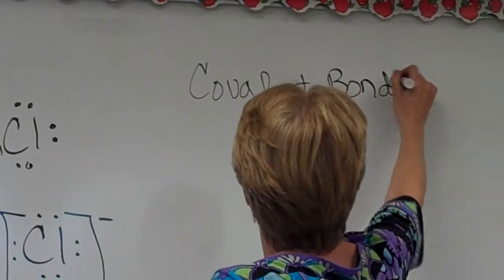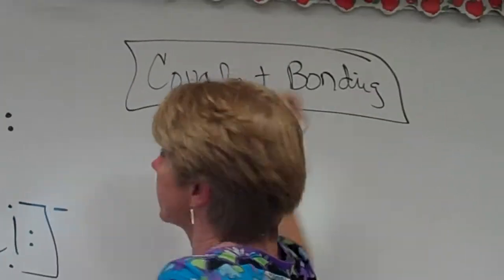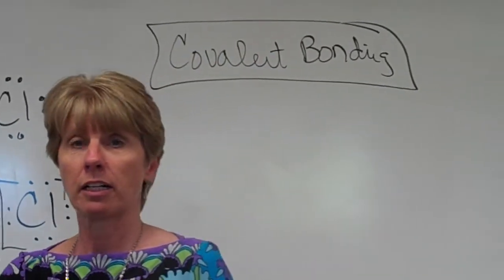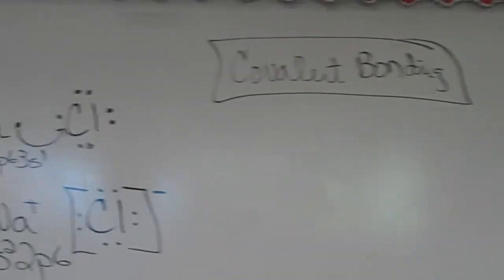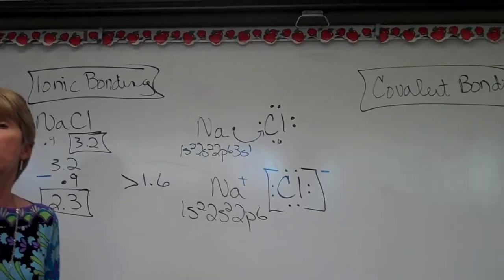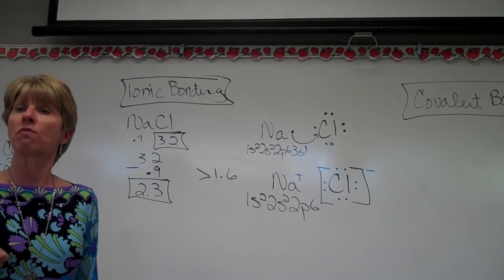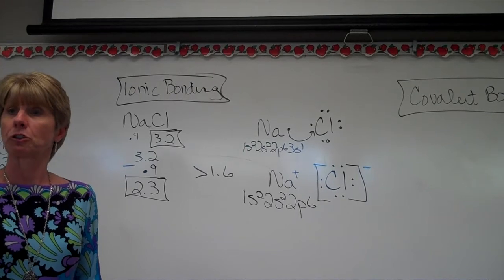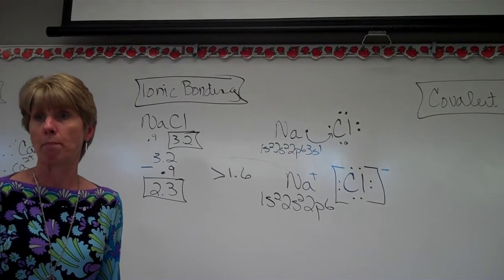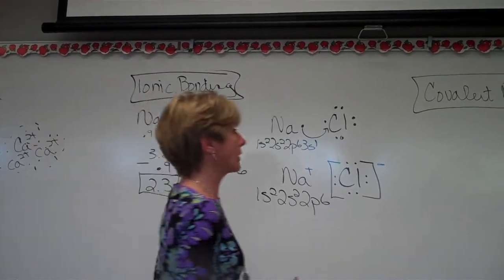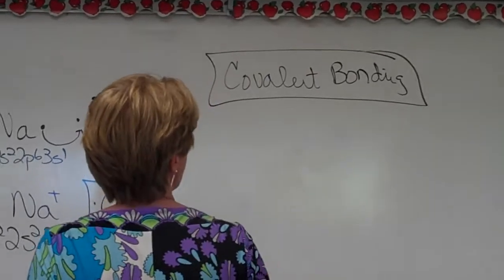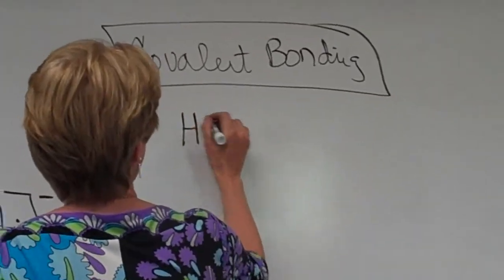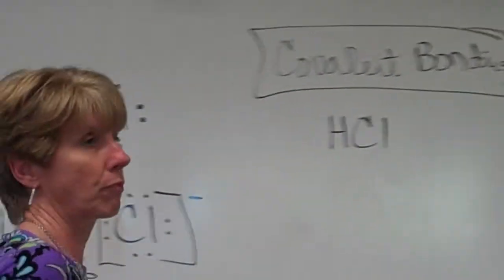Covalent bonding is the sharing of valence electrons. The sharing. The key word for covalent is sharing. This is when the electronegativity difference is less than 1.7. Okay, so let's do an example. Let's do HCl. Okay?